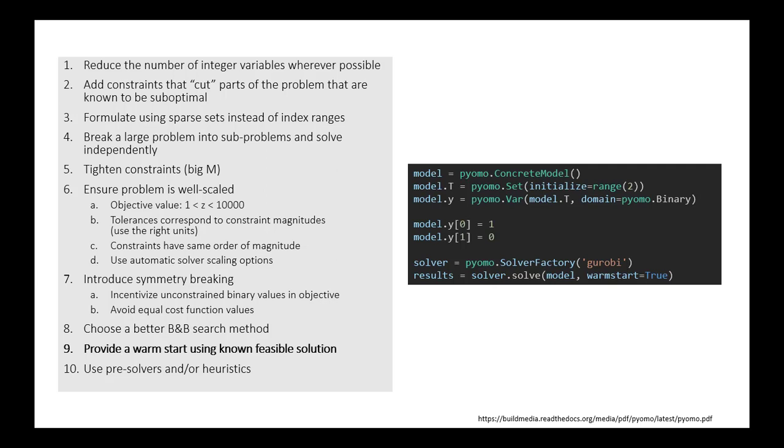The next option is using something called a warm start. One of the big computational expenses for solving models is sometimes finding a feasible solution that works to begin with. So if you know something about your problem where you can determine a feasible solution without actually running the optimization solver, you can provide that initial solution to the model so that it doesn't have to waste time finding something that works before moving on.